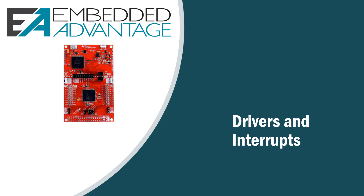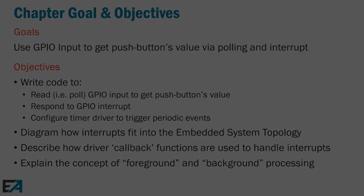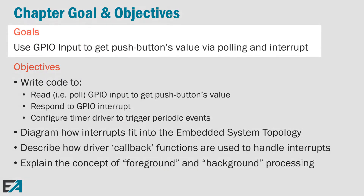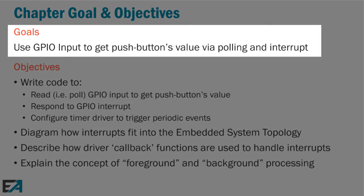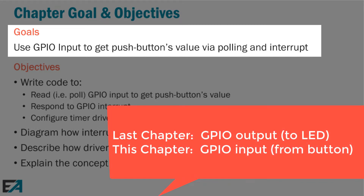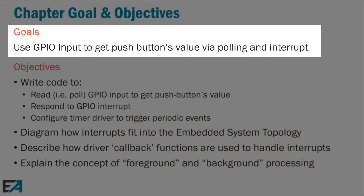Here in the interrupts chapter, we're going to be responding to events using the drivers with no RTOS. The main goal is to use the GPIO pin as an input — last chapter we used it as an output. Now we're using the GPIO pin connected to the switch to get the push button's value. We're going to do this both via polling, by reading the pin, and by using interrupts. We prefer interrupts, but there are occasions where you might want to do polling.